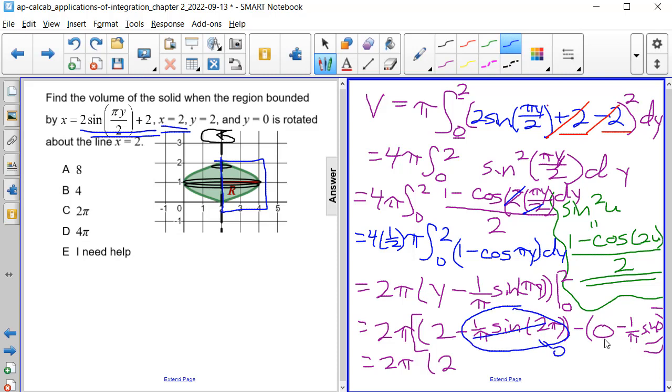Then we have a 0 here, and the sine of 0 is also 0. So this cancels out as well. So we just have 2 pi times 2, which is equal to 4 times pi as our volume, or answer choice D.